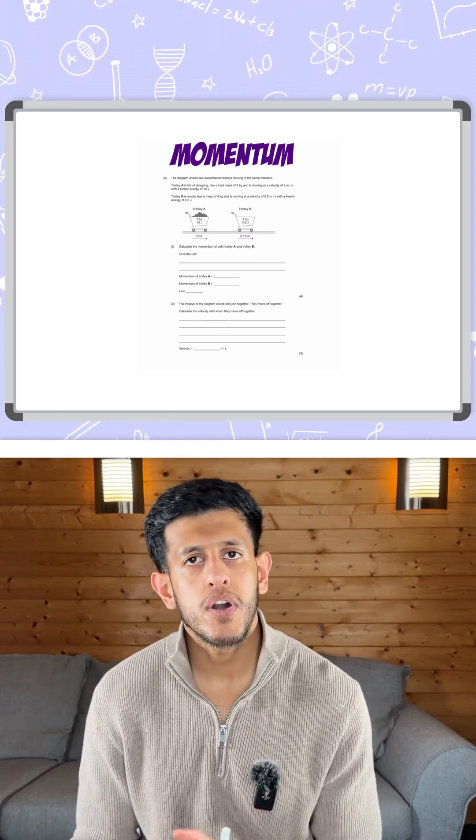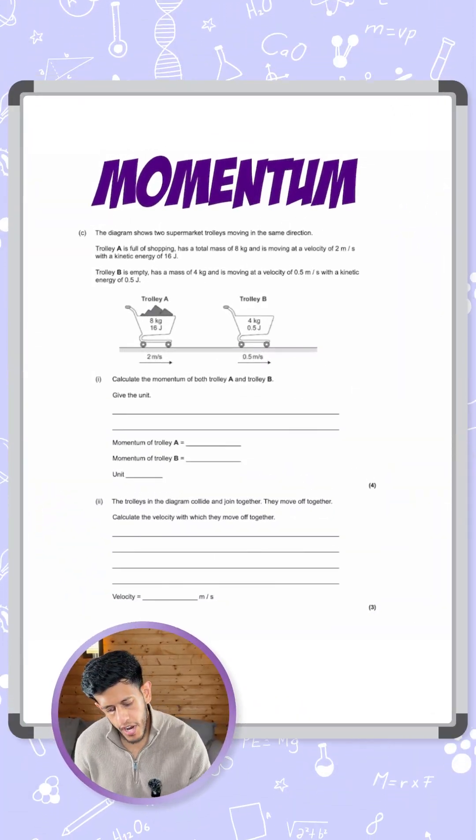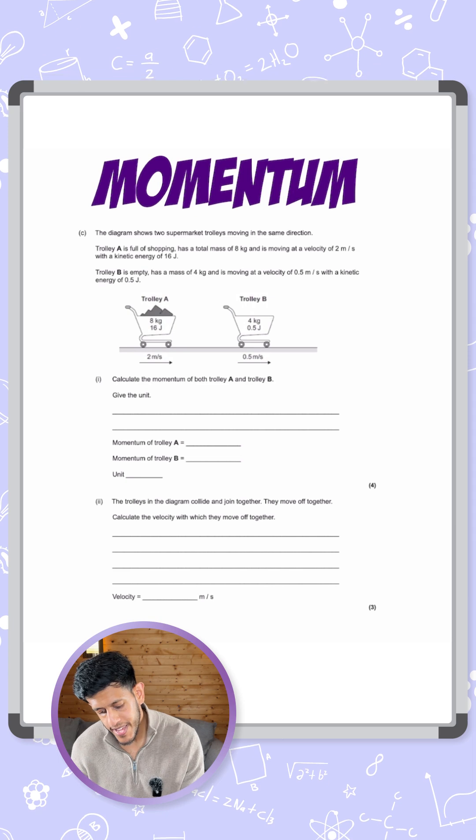Okay, let's take a look at this question talking about calculating momentum. It says the diagram shows two supermarket trolleys moving in the same direction.